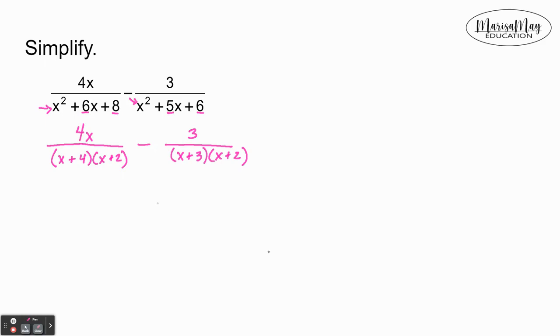So what I'm ready to do now is to form the common denominator. The common denominator looks like it's got to have an (x + 4), an (x + 2), and an (x + 3). We don't need the additional (x + 2) because we've already got one. So we're gonna multiply this first fraction by what's missing and that is the (x + 3).